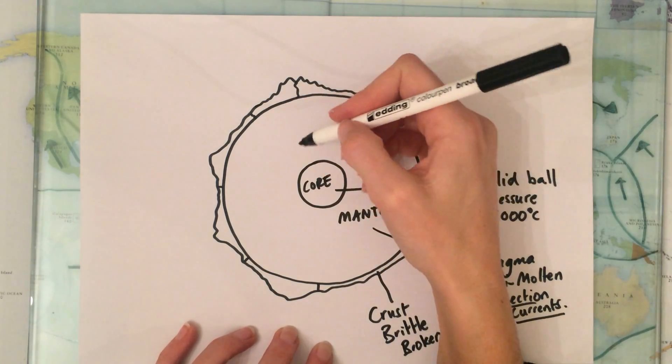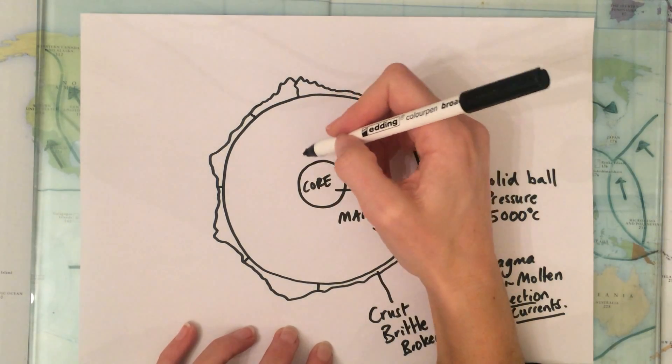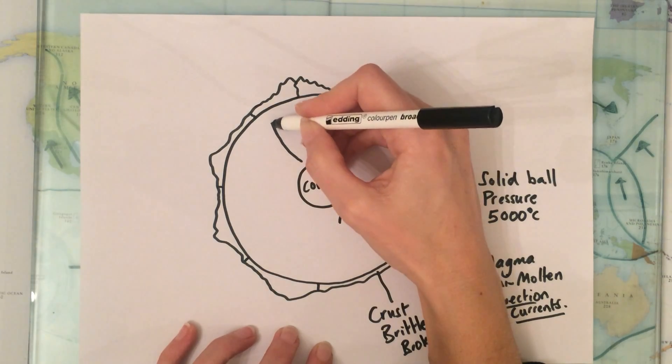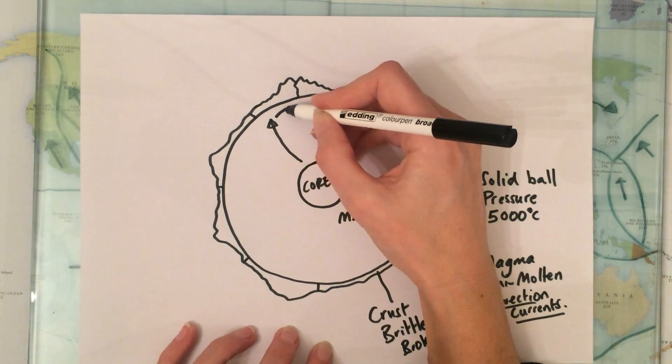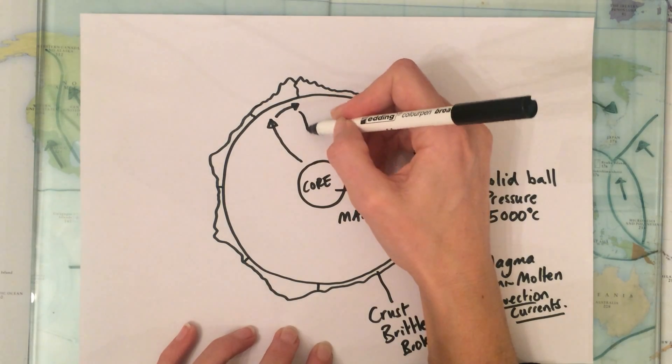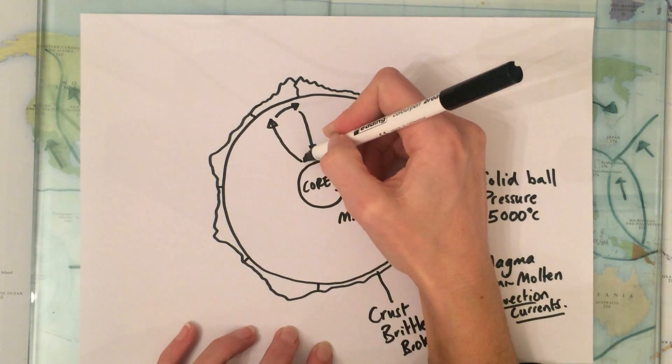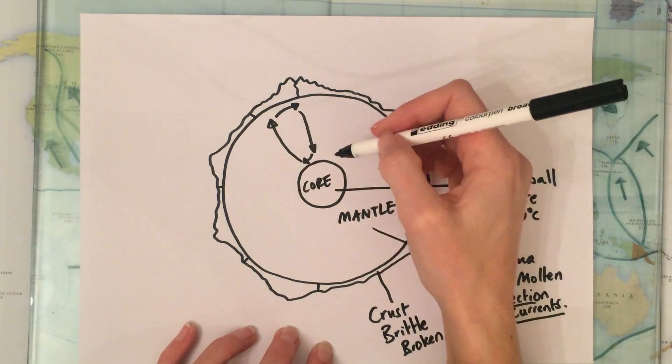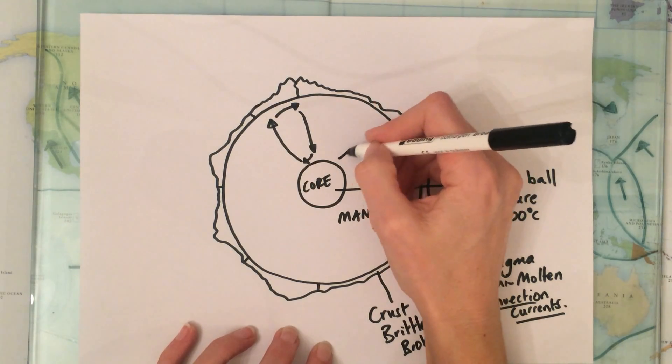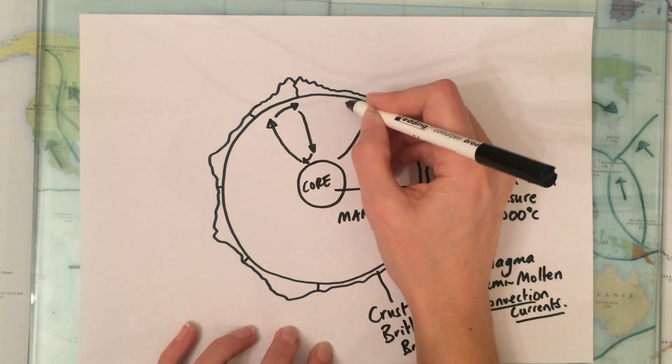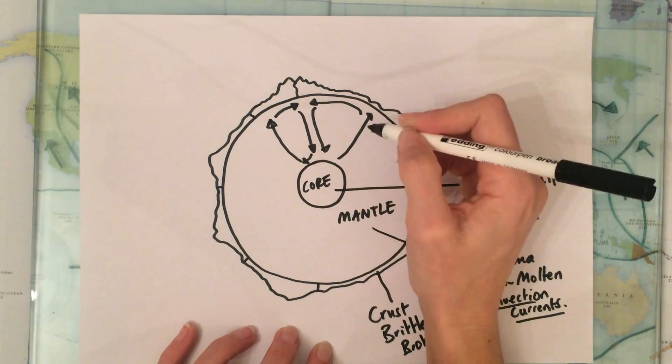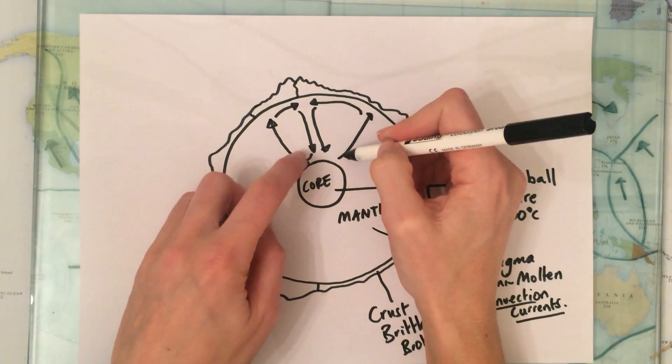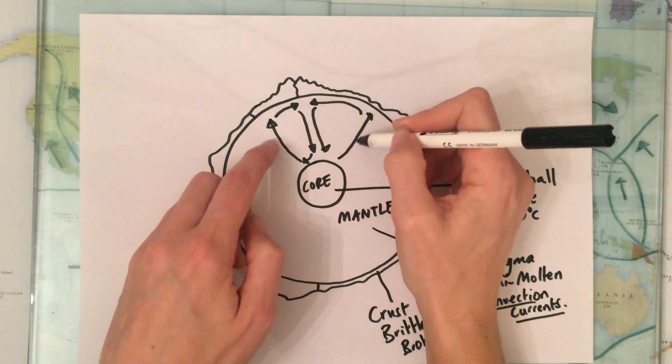So we get convection currents rising up, when they hit the crust they move sideways and then sink back down to the core and that makes a convection cell. And likewise other convection currents will move up and then move back down and so here for example we have convection currents moving in this direction towards each other.